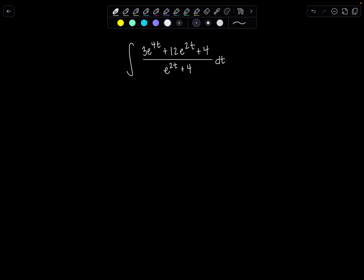So pause the video, try it on your own. I'm going to jump right in and I'm really curious to see how you guys solve it if you approach it differently than I typically do. So first thing I notice is that if I look at just these two terms and I factor out their greatest common factor, I'll see the denominator appear again, but then that's not the case with the 4. So I'm actually going to split this into two integrals.